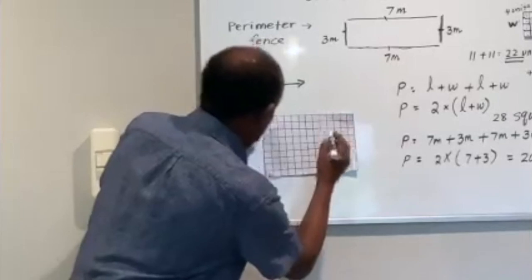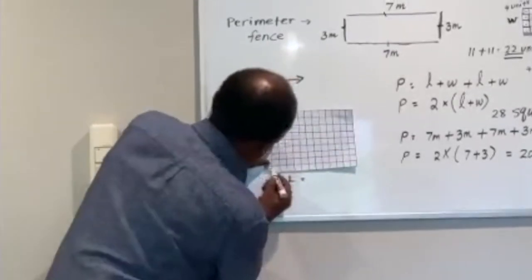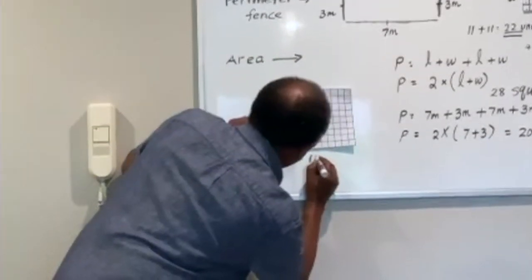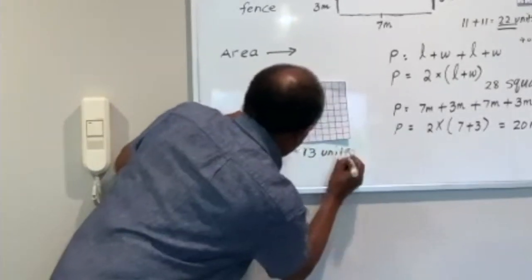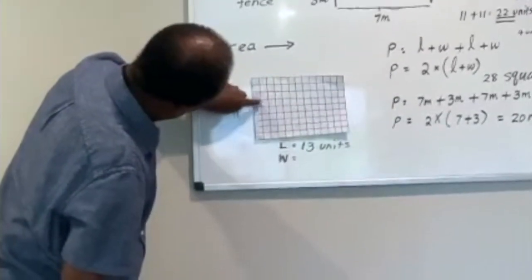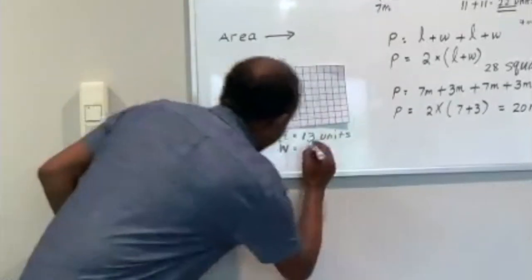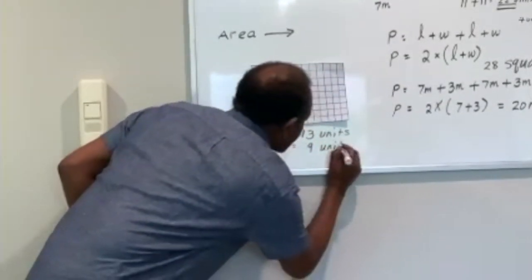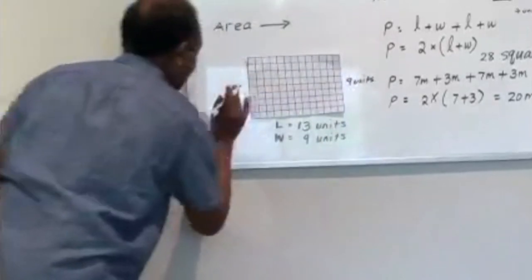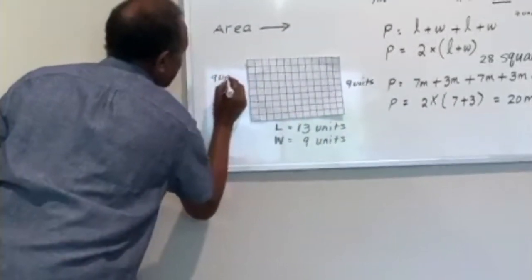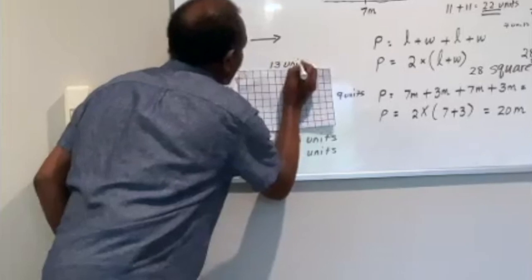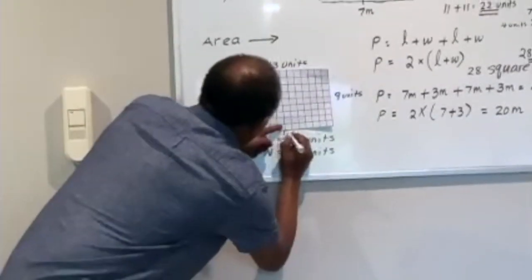The length equals 13 units — I was counting by 3. The width — counting: 2, 4, 6, 8, 9 — the width is 9 units. So this is 9 units on this side, also 9 units on the other side. And on the top, the length is 13 units; on the bottom, the length is also 13 units.